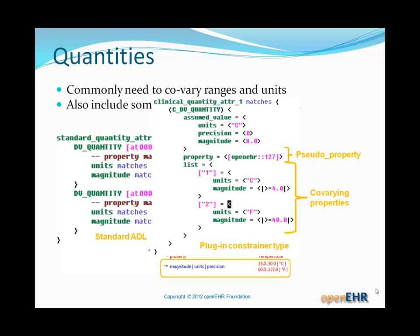What we did in ADL was to add an efficient and also more powerful, what we call a plugin constrainer type. In other words, a higher level constrainer type that's specifically designed for constraining quantities, that allows a list of alternate combinations of just units and magnitude within the same quantity constraint. And also it allows us to add other things in, such as the pseudo property, which actually is called property, in other words, the physical property that's being measured. So that enables us to specify in the archetype that temperature is being measured, even though there's no data field in the reference model type quantity for property.